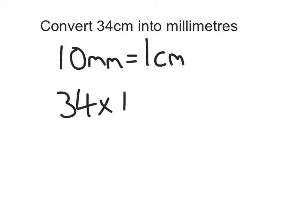Now let's look at going the other way, changing something from centimetres into millimetres. So still remember that 10 millimetres is equal to 1 centimetre. So this time instead of dividing we're going to times by 10.